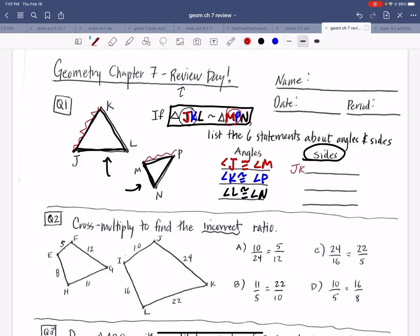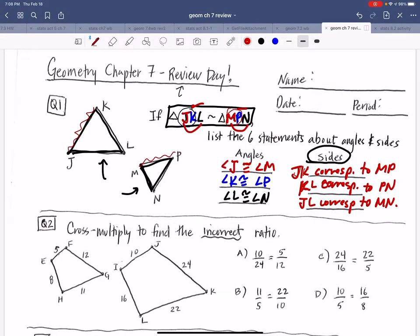JK corresponds with MP because of the ordering. We could also then say middle-last, KL would correspond to middle-last PN, and first and last JL corresponds to MN. If I was trying to find a scale factor, my scale factor is new over old. So we could set up some ratios.